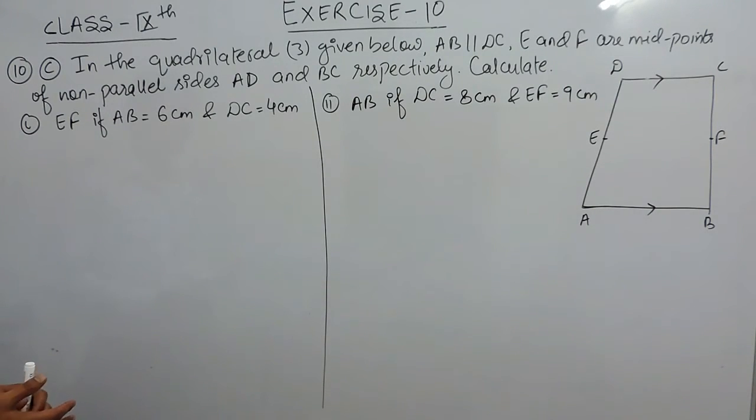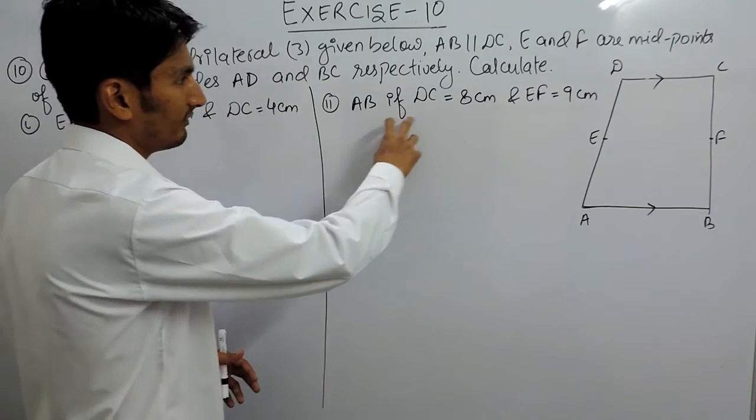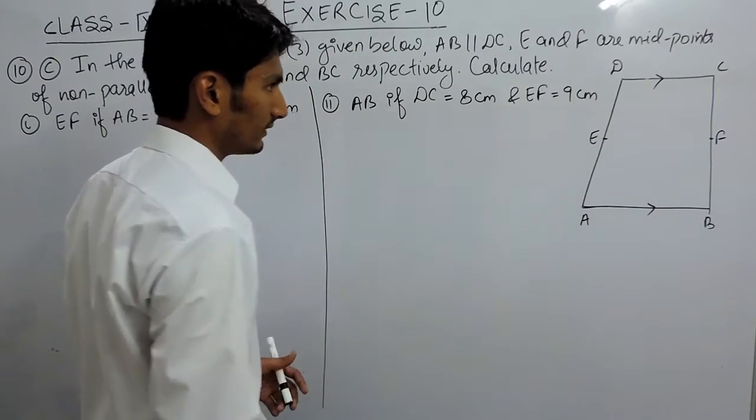In this problem we are given a quadrilateral ABCD where AB is parallel to DC, and E and F are the midpoints of non-parallel sides AD and BC. In part C, you have to calculate EF when AB and DC are given, and in part D you have to calculate AB when DC and EF are given.